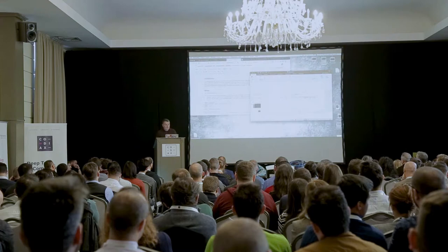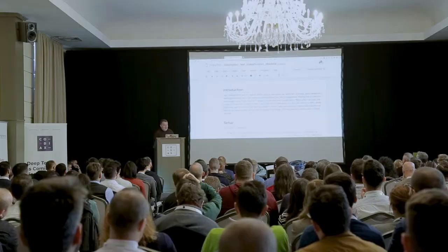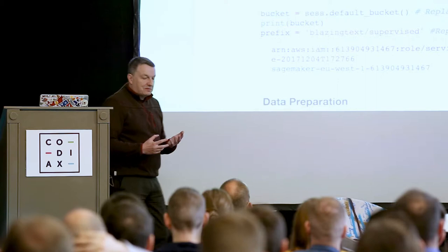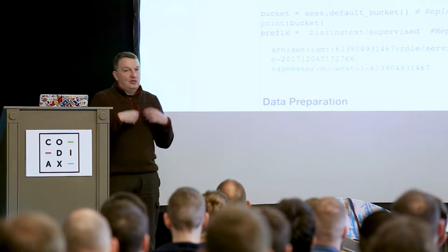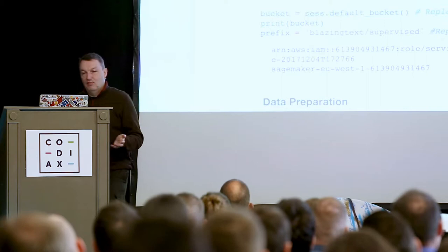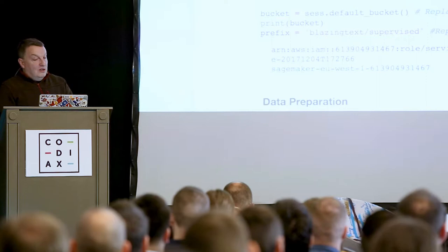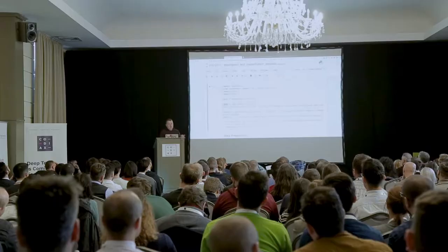Let me switch to a notebook and show how this works. Don't worry if you don't get all the tiny details — I'm just focusing on the big picture. The SageMaker workflow is always the same: grab your data, put it in S3, apply some preprocessing, configure the training job, train, and then deploy. All those notebooks follow the same structure. Initially, I import the SDK, set up an IAM role to give SageMaker permissions to read from S3, and specify an S3 bucket.